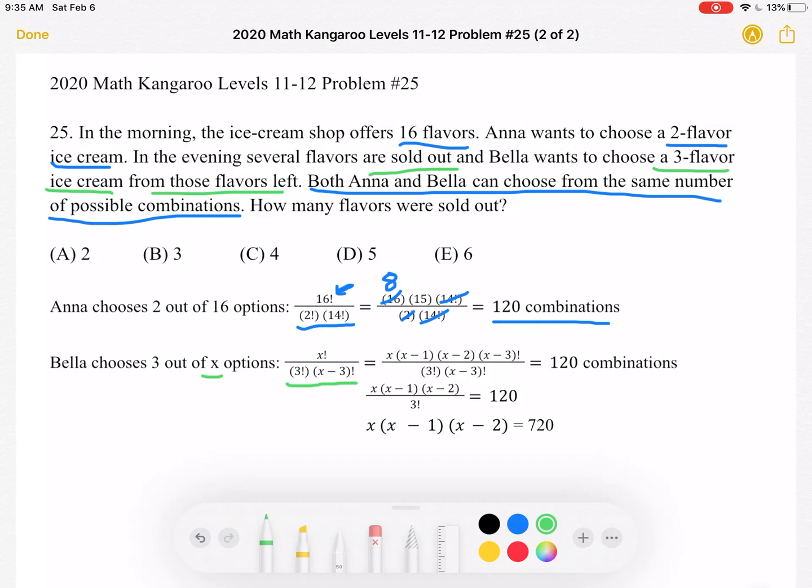Factorial just means X times X minus 1 times X minus 2, and so on. So we can rewrite the X factorial in the numerator as X times X minus 1 times X minus 2 times X minus 3 factorial. This way, we can cancel out the X minus 3 factorials in the numerator and the denominator. And we know that this number must be equal to 120 because the problem tells us they both can choose from the same number of combinations.